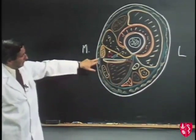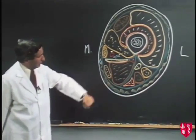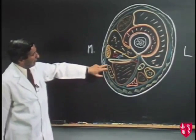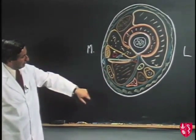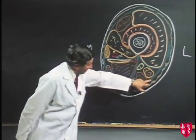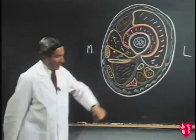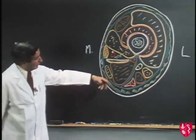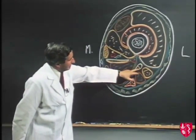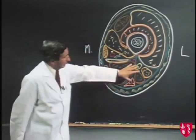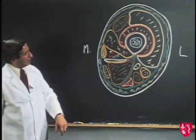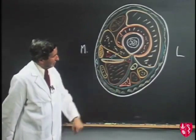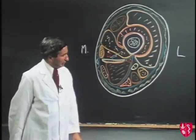The medial compartment contains the adductor group of muscles with blood supply from the profunda artery and nerve supply from the obturator nerve. The posterior compartment contains the hamstrings — the biceps femoris, the semitendinosus, and semimembranosus — and has the sciatic nerve. The blood supply of the posterior compartment is derived above from the inferior gluteal artery and by perforating branches of the profunda artery.